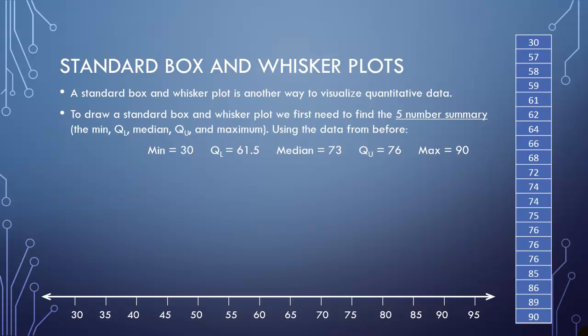It's going to be drawn on a number line, and I'm going to look at the data set we talked about earlier. First we're going to calculate what's called the five-number summary. These five numbers are the minimum, the lower quartile, the median, the upper quartile, and the maximum.